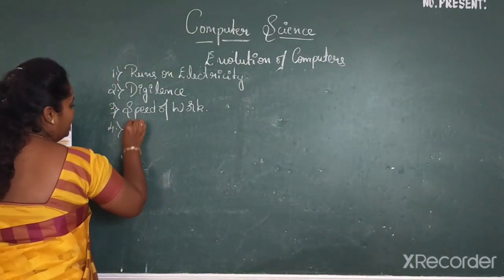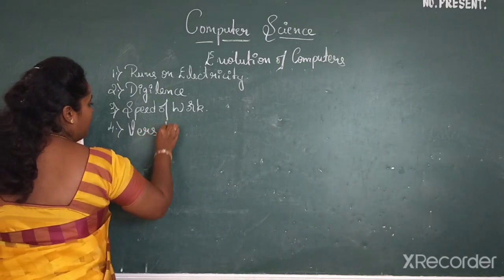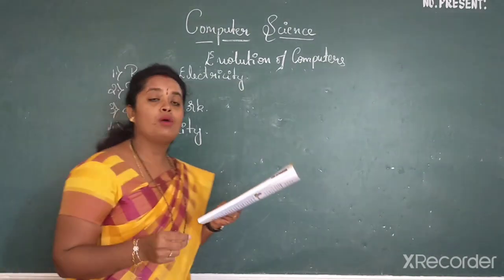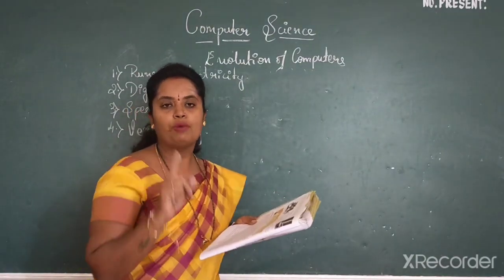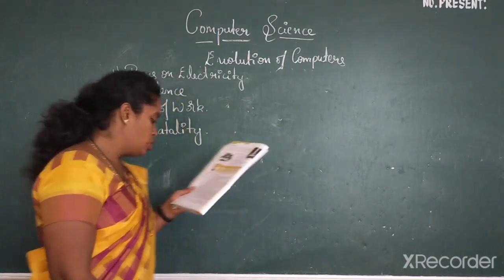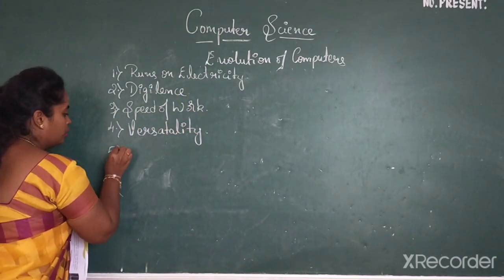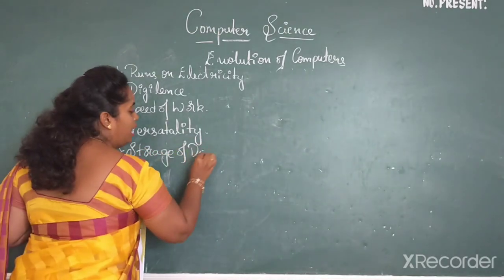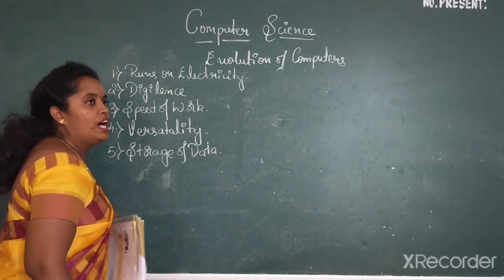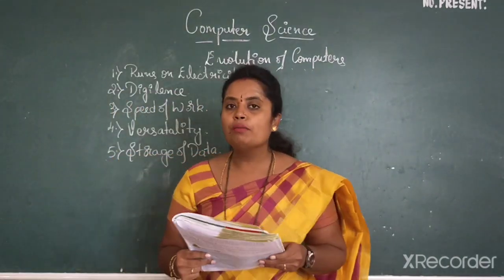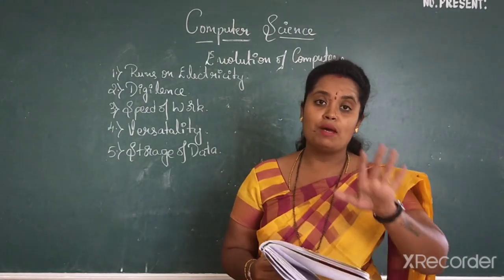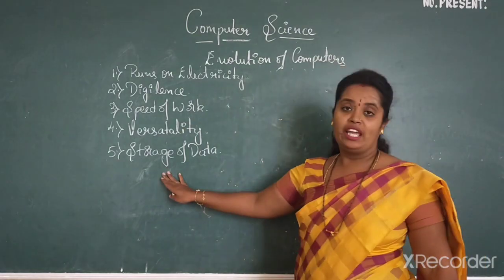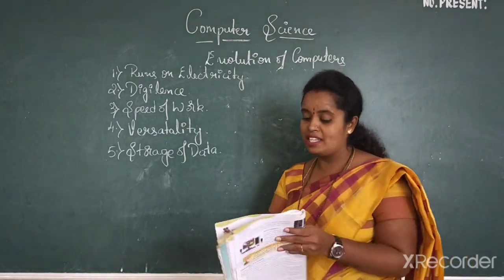Fourth one is versatility. A computer is capable of performing variety of tasks, not one task. Then storage of data. If I ask you what did you do last year at this time, this day, will you be able to tell? No. But the computer remembers everything. It has got a superb memory and storage. Storage capacity is more.